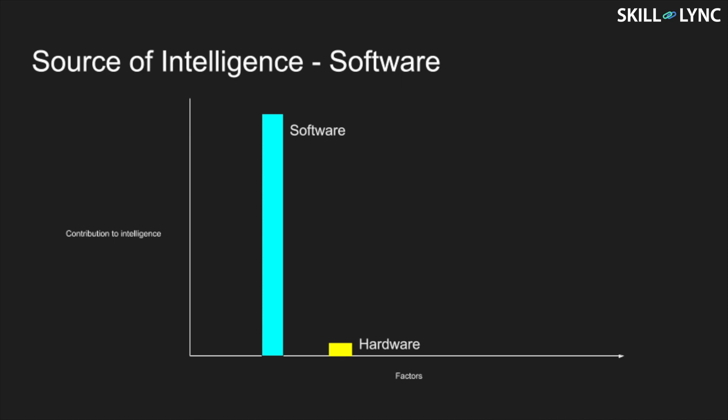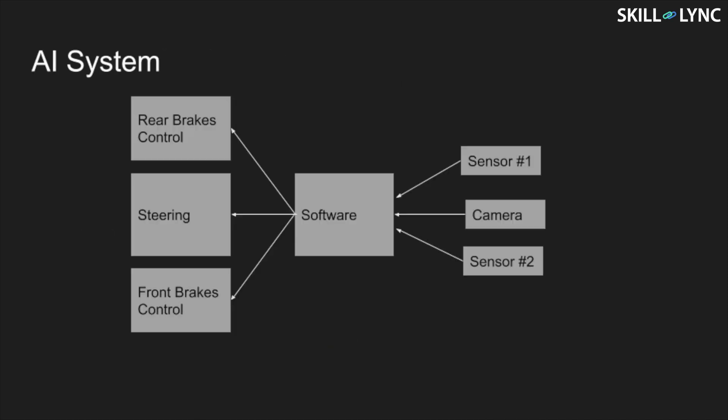In order to drive a car, a computer needs the ability to see. So the camera, the software, and any other sensors from which the software pulls or pushes data can be considered to be a part of an AI system.